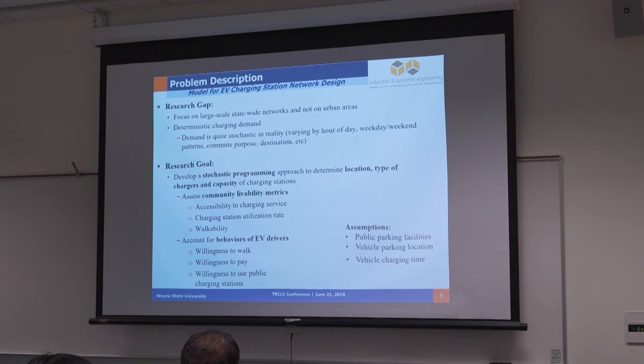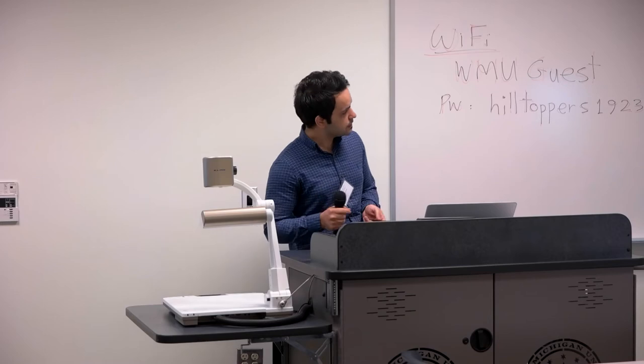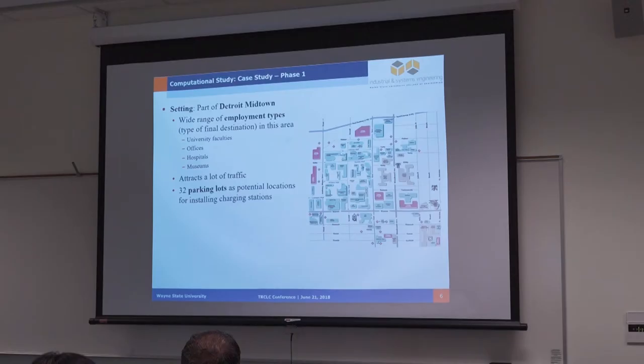There are some assumptions in Phase 1. All charging places should be public charging facilities, and all charging types are considered to be level 2. To investigate the efficiency of the model, we consider a part of Detroit area which attracts lots of traffic and has lots of different buildings. We consider 32 parking locations as potential locations for installing charging stations.